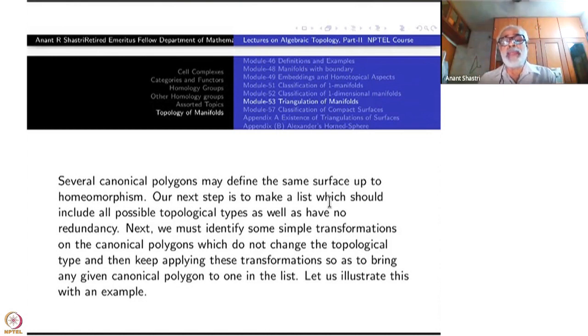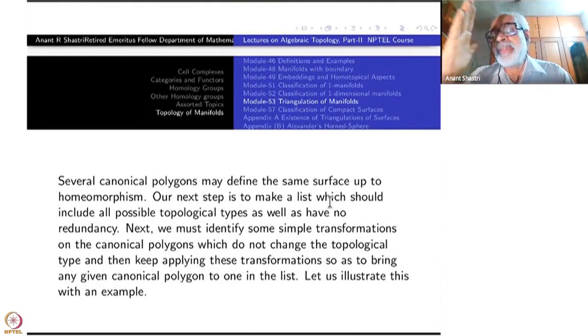Our next step is to make a list which should include all possible topological types as well as have no redundancy. Our list should not have A and A prime are the same surfaces and so on. The list must be distinct. If A1, A2, A3, or 1, 2, 3, 4 represents surfaces, they must be topologically different. That is the meaning of no redundancy. And it should be exhaustive. Somebody later on, oh, this surface is left out from here. That should not happen. Once you have achieved that, the classification is over.